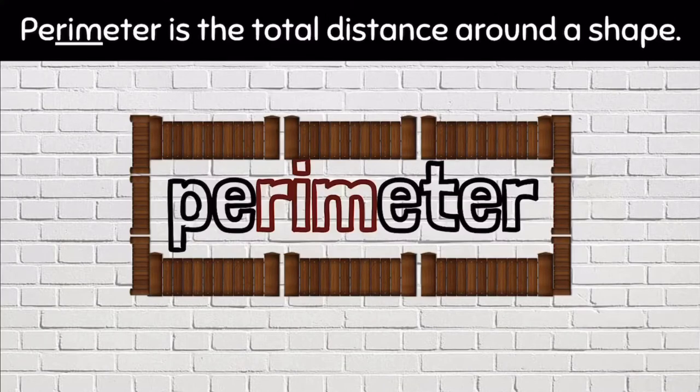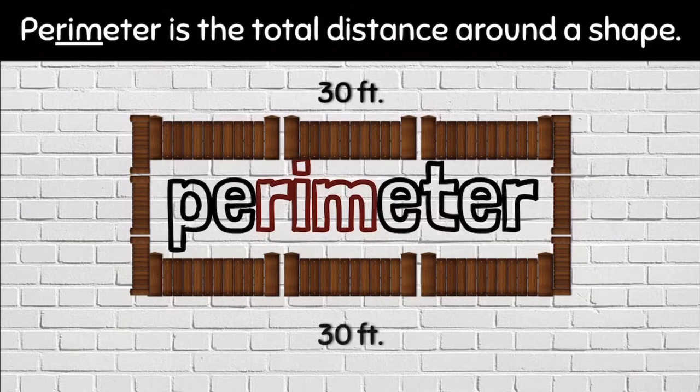You can think of perimeter as a fence. So let's look at the distance around this fence. We have 30 feet, 30 feet, 15 feet, and 15 feet. We are going to find the total.